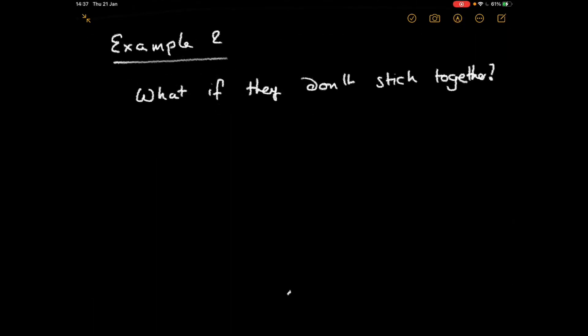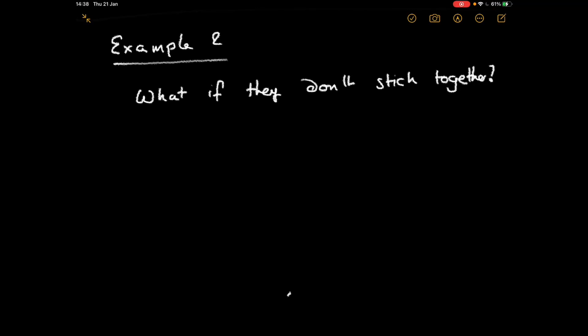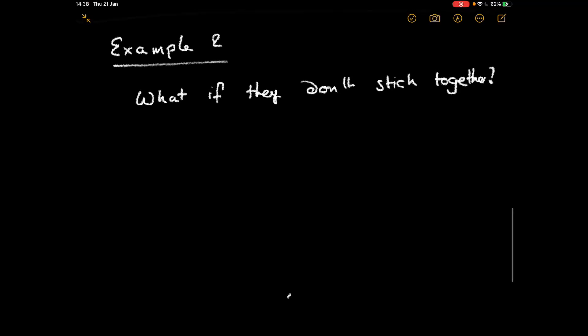Now let's deal with another example and complicate it slightly. What if they don't stick together? What happens if you've got two objects that collide and then don't move off as one unified blob? Perhaps they're quite solid. The approach is always exactly the same.